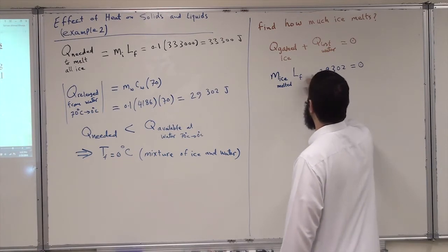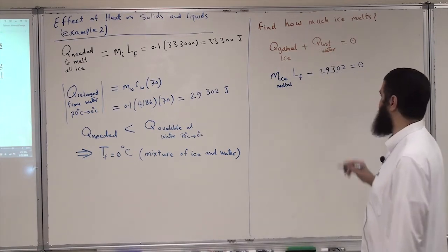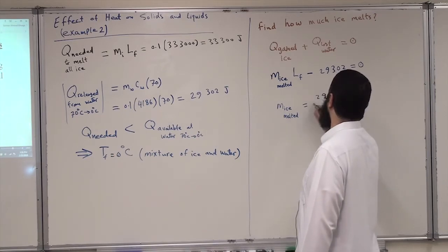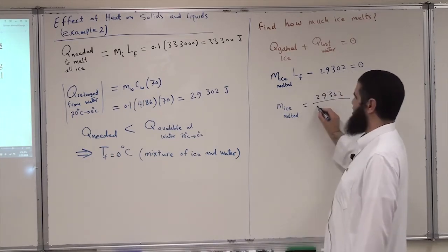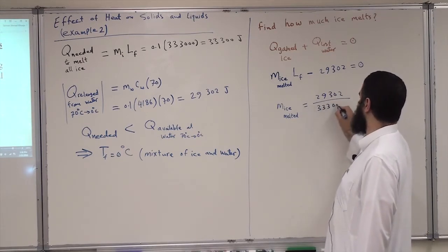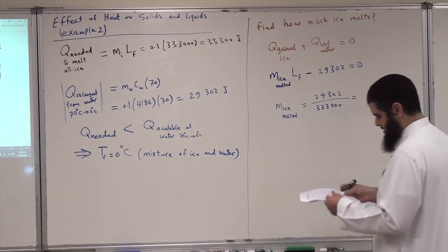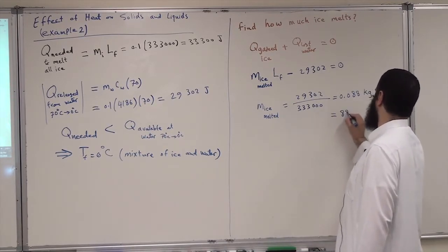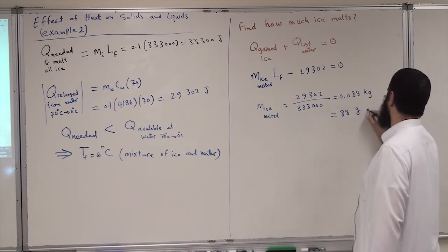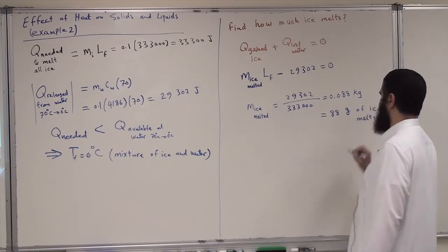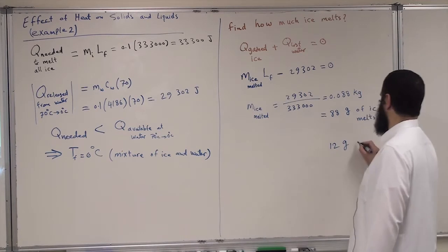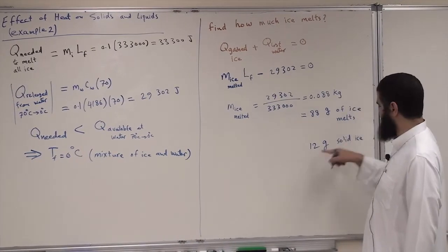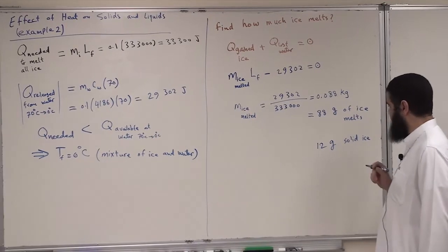Setting the equation to zero, with the water heat term negative since it is heat lost, the mass of ice melted equals 29,302 divided by 333,000, which gives 0.088 kg, or 88 grams of ice melted. Therefore, 12 grams remains as solid ice — 88 grams is now liquid water and 12 grams is solid ice.